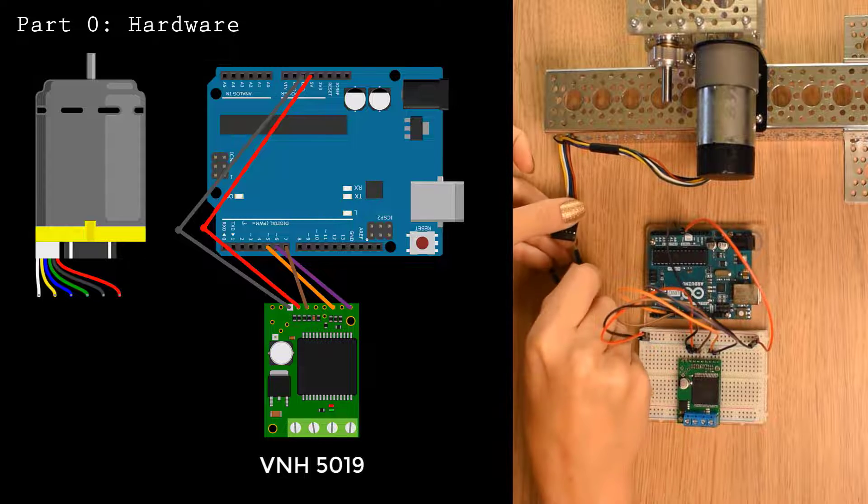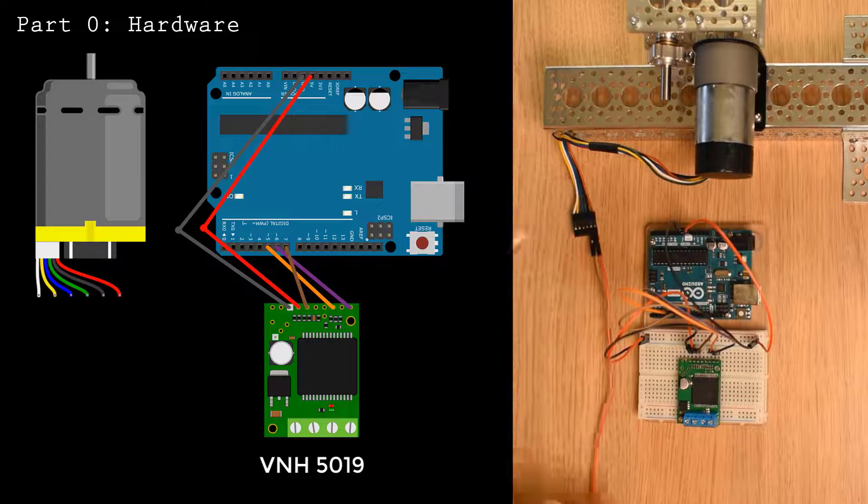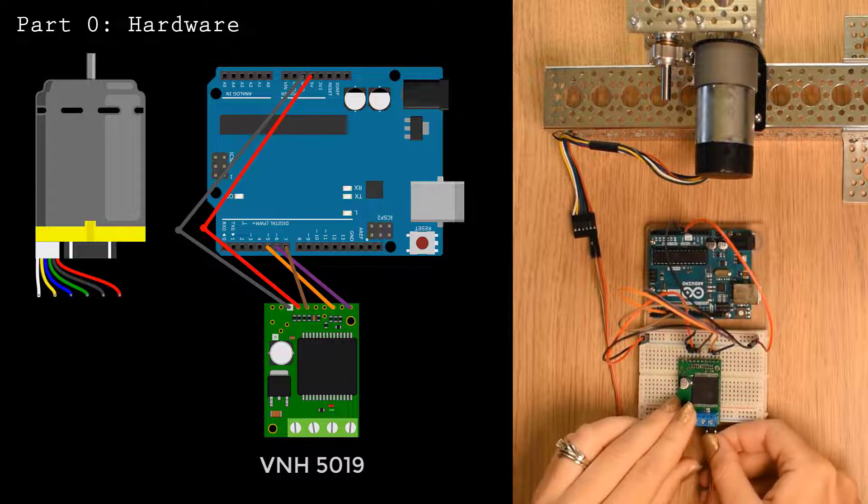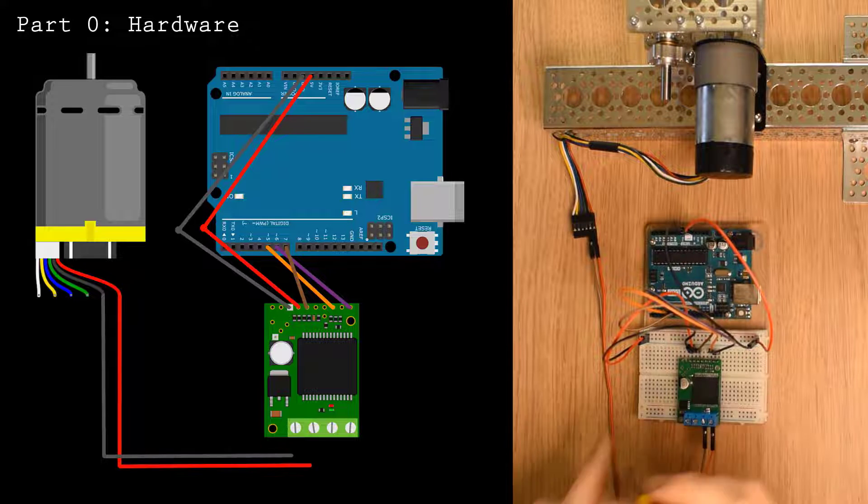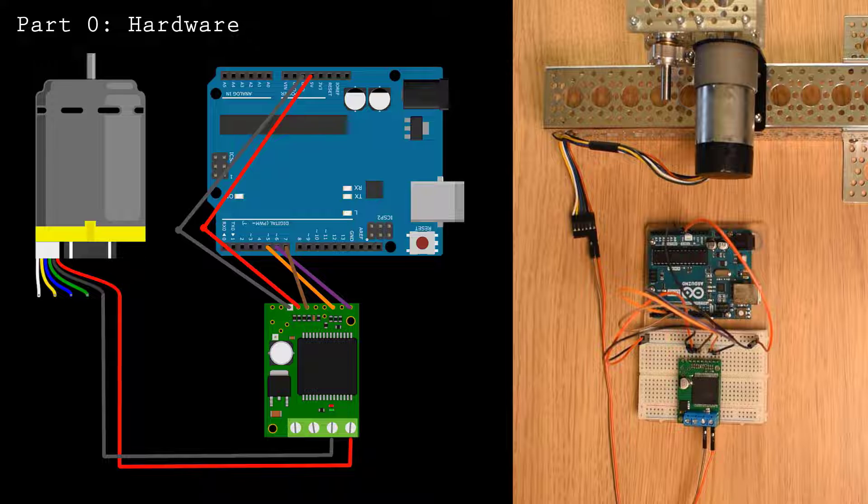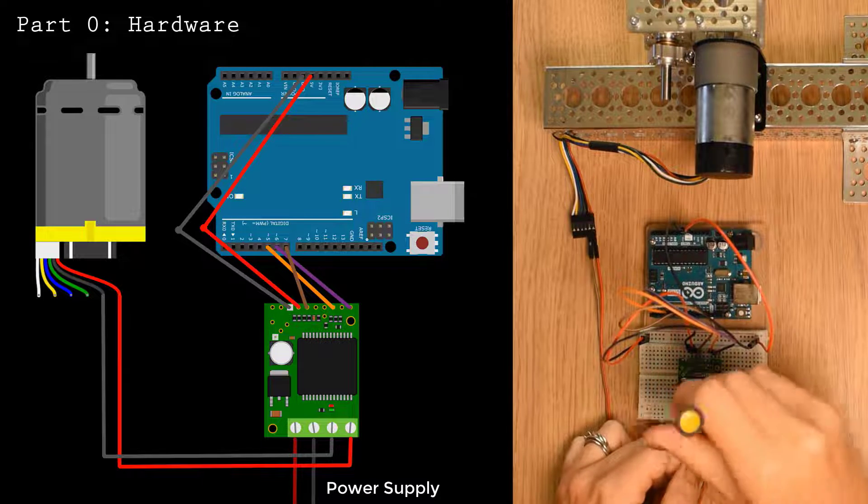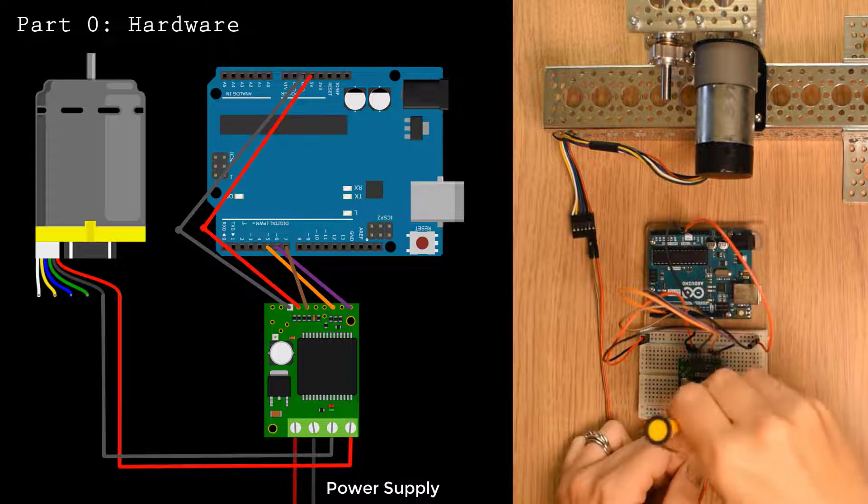The pin order will vary depending on your motor driver and MCU. I'm using a Pololu VNH5019 motor driver and an Arduino Uno. Next, connect the motor leads to the motor driver, and the motor driver to an appropriate power supply.